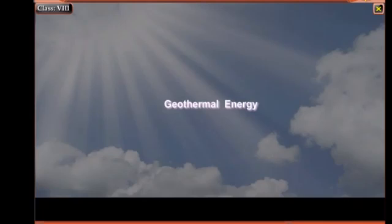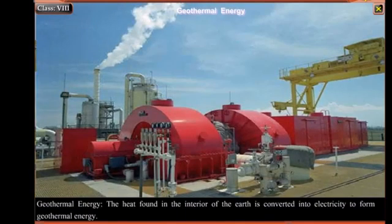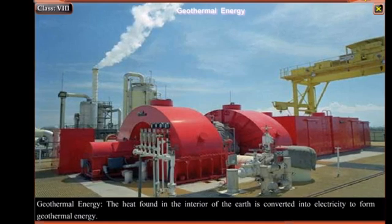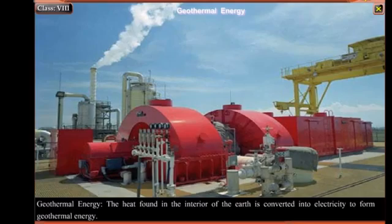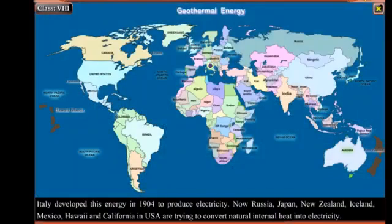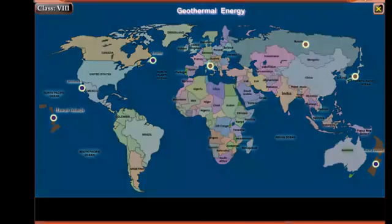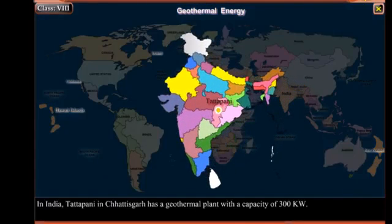Geothermal Energy: The heat found in the interior of the earth is converted into electricity to form geothermal energy. Italy developed this energy in 1904 to produce electricity. Now Russia, Japan, New Zealand, Iceland, Mexico, Hawaii, and California in USA are trying to convert natural internal heat into electricity. In India, Tattapani in Chhattisgarh has a geothermal plant with a capacity of 300 kilowatts.